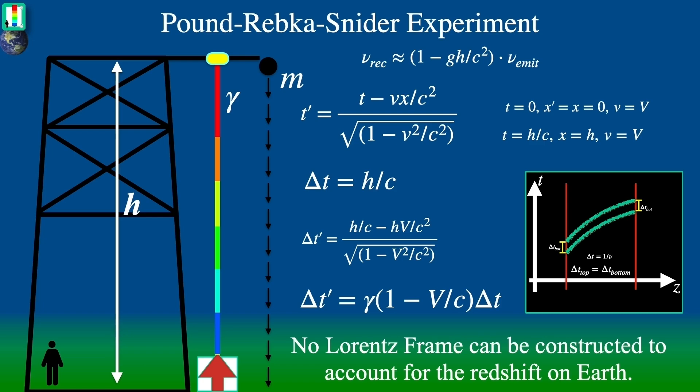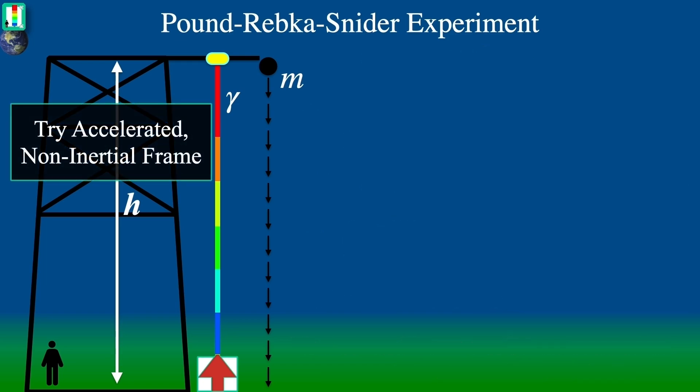However, the Pound-Rebka experiment shows that the time difference depends on the height in a constant gravitational field. This means every little height difference would need to be represented by a different Lorentz transformation with a different speed. We're now stuck. We can't just find one Lorentz frame to do it all for the Earth. We have to find a different one for every tiny bit of height difference. What a mess!